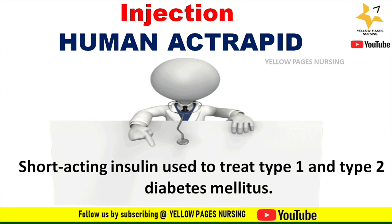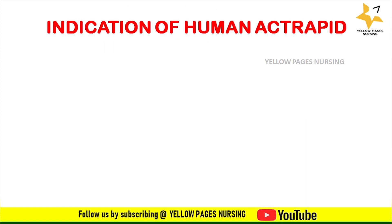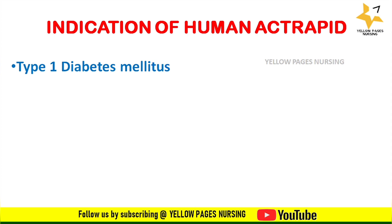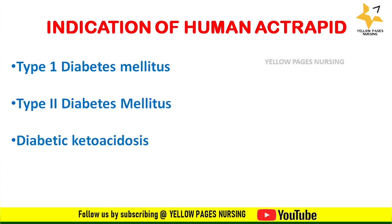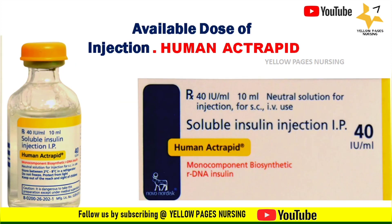Indications of human actrapid include type 1 diabetes mellitus, type 2 diabetes mellitus, diabetic ketoacidosis, and hyperkalemia. Injection human actrapid comes in vial form with 40 international units per ml in a 10 ml vial.